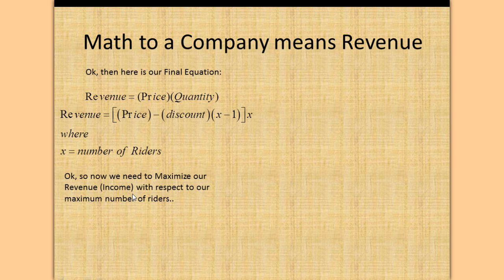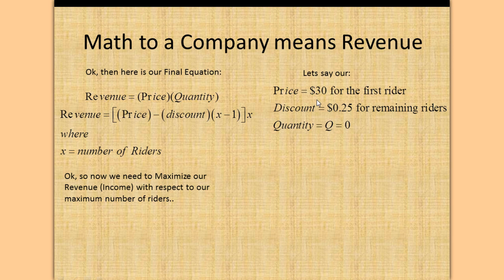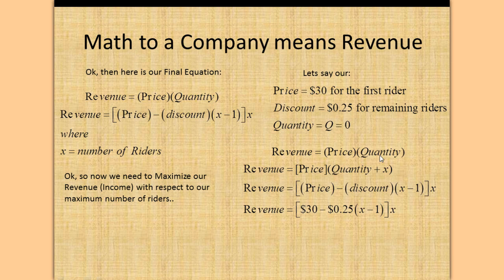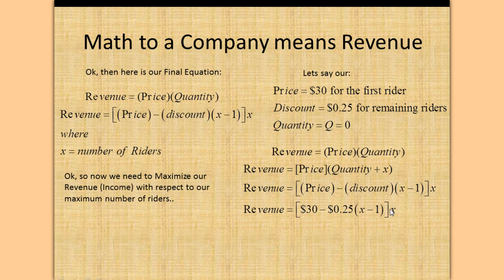We have to maximize our revenue with respect to our maximum number of riders. Let's say our price is $30 for the first rider and discount equals 25 cents for remaining riders. Our quantity Q is equal to zero. Revenue equals price times quantity, which equals (price minus discount) times X. Our price is $30 and our discount is 0.25 times (X minus 1), all times X. That's our revenue equation.